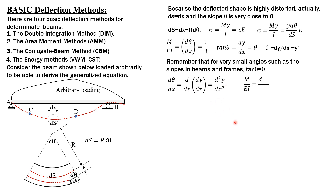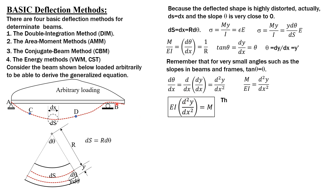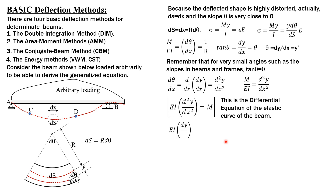Since dθ/dx = M/EI, and dθ/dx also equals the second derivative of y with respect to x, we arrive at the differential equation of the elastic curve: EI y'' = M. This is a second-order differential equation, and you should already be familiar with it — EI times the second derivative of y equals the moment at any point on the beam.